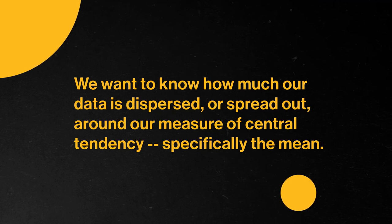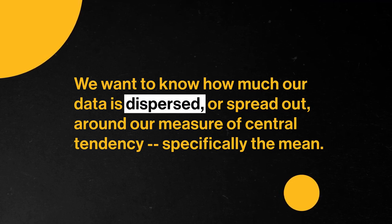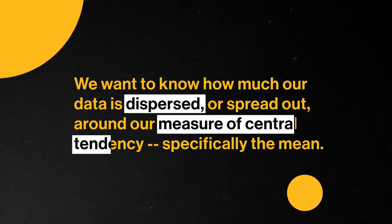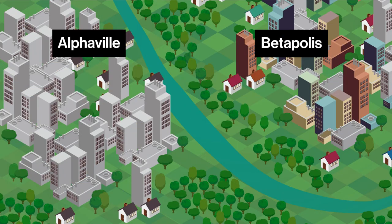Now, we want to get an idea of how much things vary across a population. In math speak, we want to know how much our data is dispersed, or spread out, around our measure of central tendency — specifically the mean. And in math we have some standard ways of figuring out exactly how dispersed the data are. To see this, let's return to our tale of two cities.